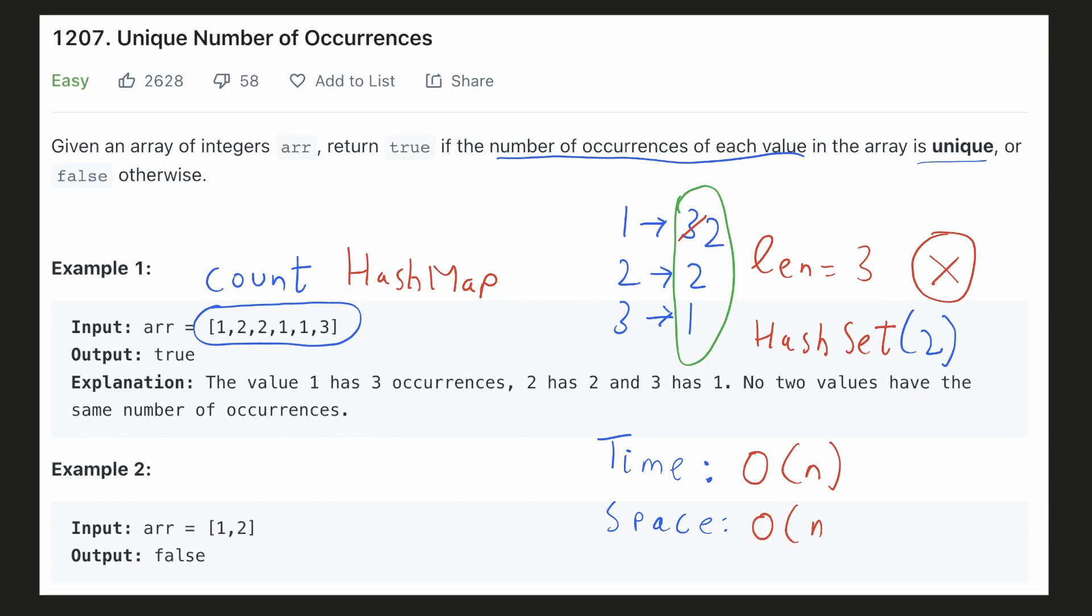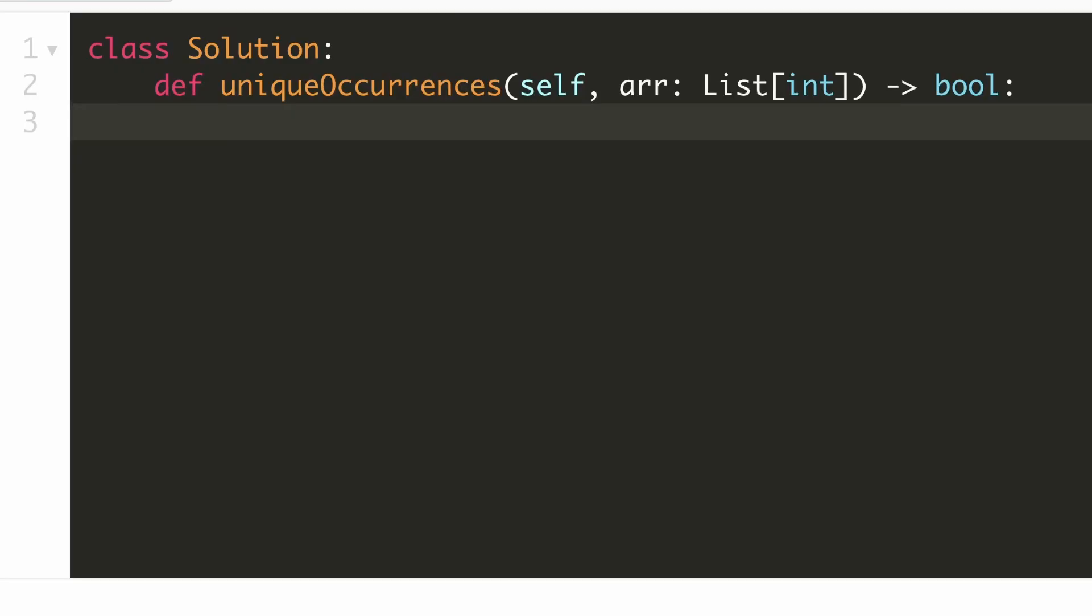The space complexity would be O(n) because we are using a hash map of size n. Let's implement our solution. We'll have to count the occurrence of each number in a hash map.